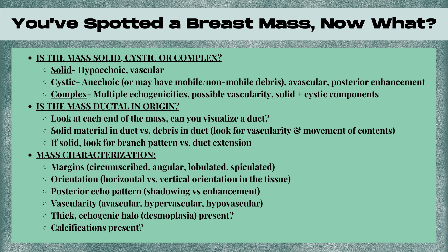Finally, you want to characterize the mass. Look at its margins — is it circumscribed? Does it have angular, lobulated, or spiculated margins? Does it have a horizontal or vertical orientation in the tissue? What is its posterior echo pattern — does it have shadowing or enhancement behind it? Does the mass have vascularity — is it avascular, hypervascular, or hypovascular? Is there a host response of the tissue around the mass, such as a thick echogenic halo known as desmoplasia? Are there any calcifications present? These are all things to evaluate on the ultrasound.